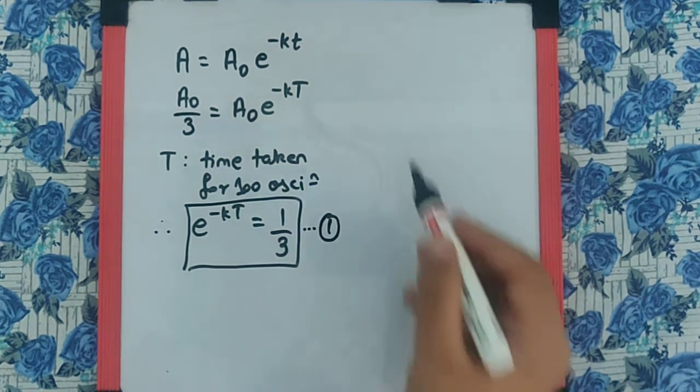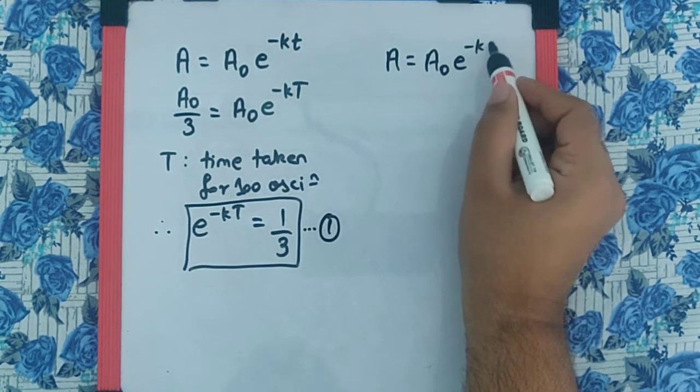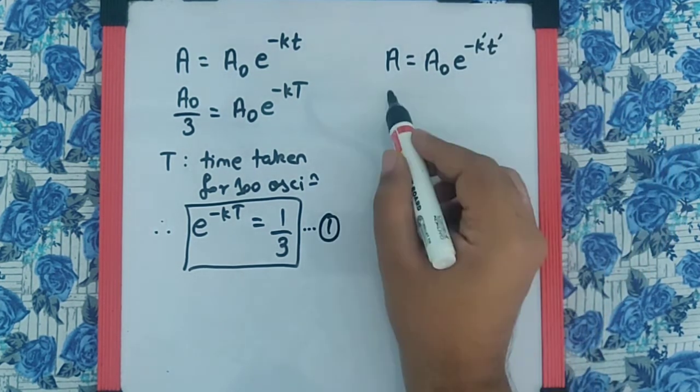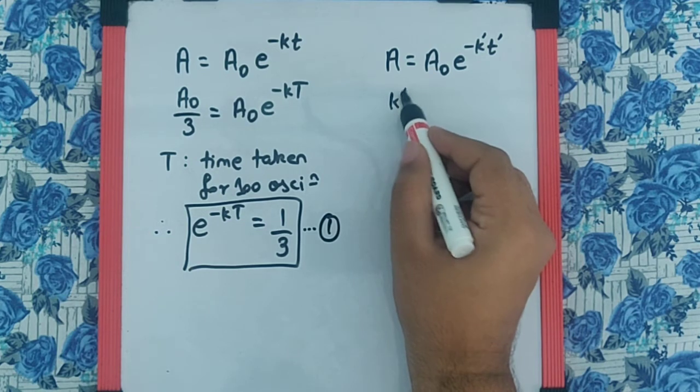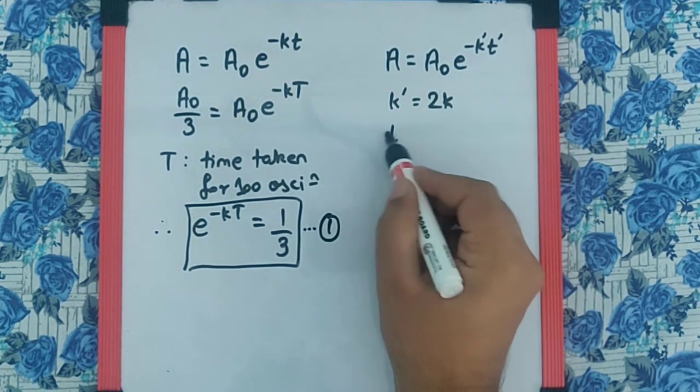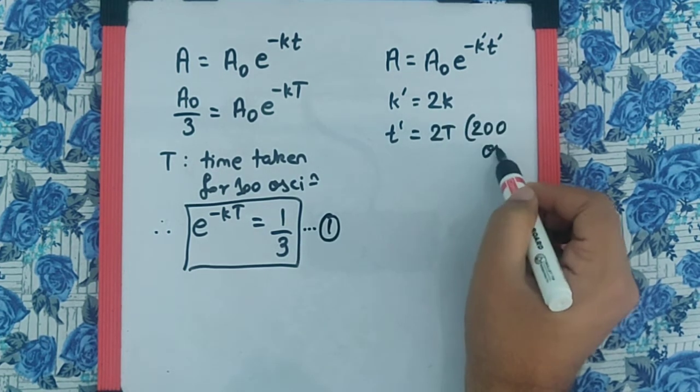In the second case, we can say again A is equal to A₀ e raised to minus kt. But this time, k' and t', k' is double the k because the damping factor doubles and t' is 2 times the T because there are 200 oscillations.